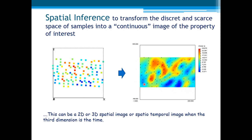This image can be a 2D or 3D spatial image, or a spatial-temporal image, when the third dimension is time. So this is usually the main goal of a Kriging exercise.